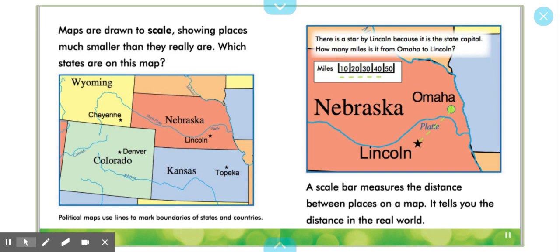There is a star by Lincoln because it is the state capital. How many miles is it from Omaha to Lincoln? Miles: 10, 20, 30, 40, 50. A scale bar measures the distance between places on a map. It tells you the distance in the real world.